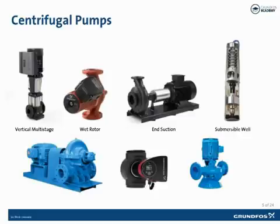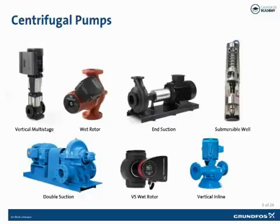Additional HVAC pump types include submersible well pumps for ground water and water source heat pumps, double suction for primary and condenser water loops, variable speed wet rotor pumps for boiler, secondary, and tertiary loops as well as coil pumps, and vertical inlines for primary, secondary, tertiary, and condenser water loops. Detailed specific application guidelines and feature benefits of these pumps are discussed in subsequent modules.